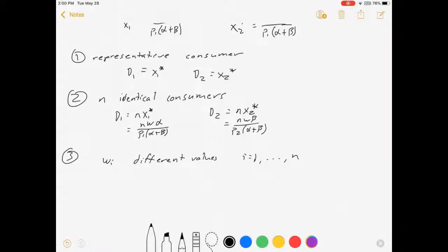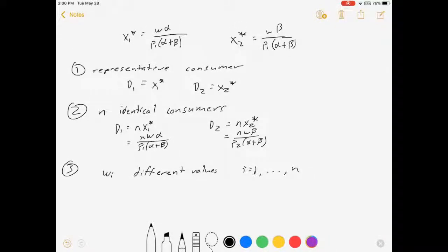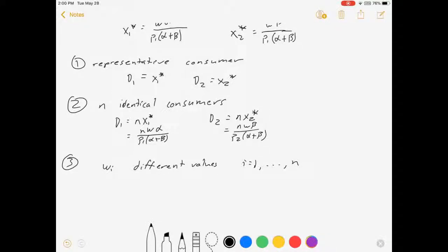For all these different consumers, for i equals one comma dot dot dot to n, some of them may have the same value, some of them may not. I don't know, it doesn't really matter. And so if I want to get my demand function for good one, I'm now going to have to sum over all the wi's.